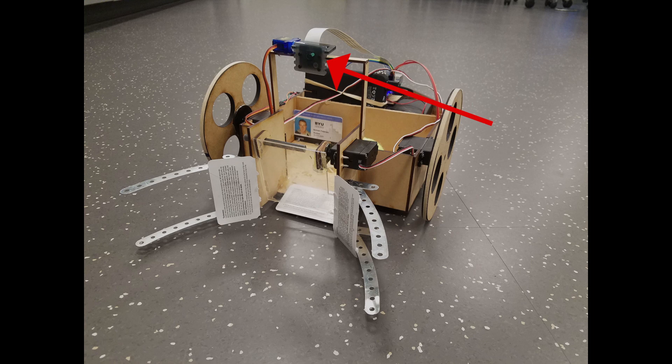It receives its information from the Raspberry Pi camera, which has the ability to connect directly to the Raspberry Pi. The camera sends images to the Raspberry Pi, which are then processed.